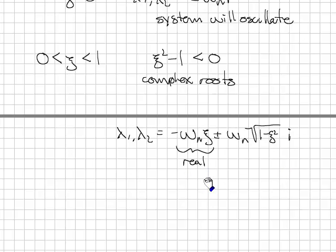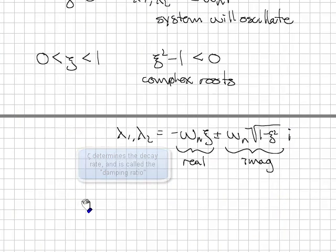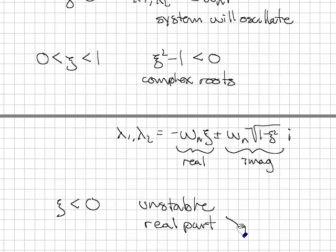Notice that I've factored the minus 1 out from underneath the square root, which gives me the i, and then I've switched the coefficients here. This is a real part, and it's less than 0. This is imaginary. This tells us how fast the system will decay. This tells us what the frequency will be. The other possibility is that ζ is less than 0. And if it's less than 0, we can see right away that the system will be unstable. That's because the real part of the root will always be greater than 0, which gives us an unstable system.